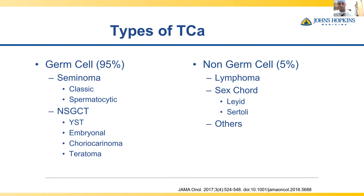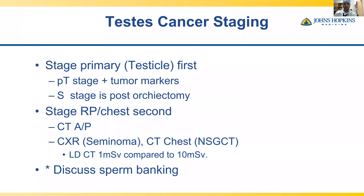For seminomas, there are two types: classic and spermatocytic, defined by histology including the fried egg appearance. For non-seminomas, you have yolk sac tumors known for highly elevated AFP, embryonal carcinomas which are the most undifferentiated, choriocarcinomas with very high beta-HCG that spread hematogenously causing brain and lung metastases, and teratomas, which are chemotherapy-resistant problem children that I'll cover in upcoming slides.